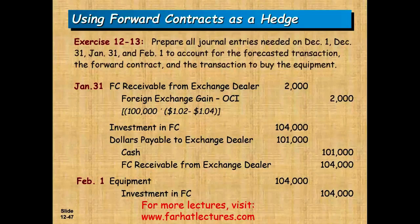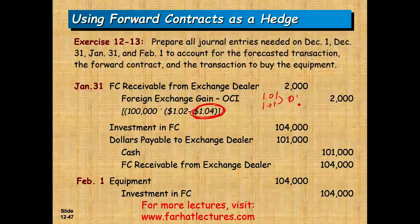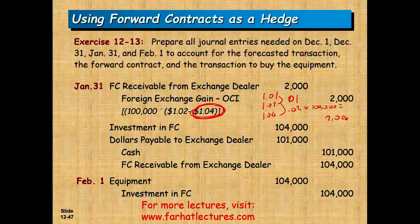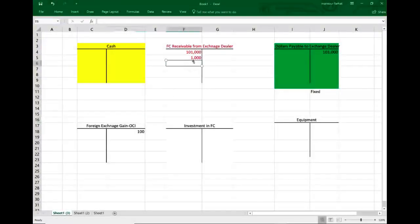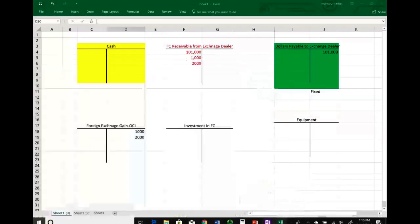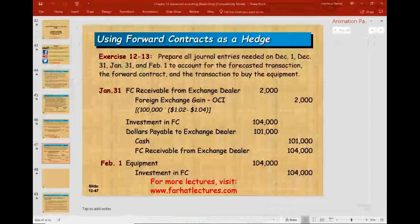On January 31st, the spot rate was 1.04, which is also the forward rate on the settlement date. We started at 1.01, by December 31st the contract was at 1.02, and now it's at 1.04. We gained an additional two cents. Multiplied by 100,000 Swiss francs, that gives us an additional gain of $2,000. So we debit the forward contract receivable $2,000 and credit foreign exchange OCI $2,000.